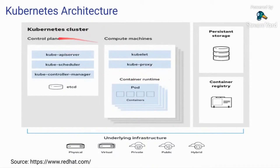There can be one control plane or multiple instances of control plane processes, depending on whether you want high availability or not. Typically in an enterprise cluster, you may want high availability.